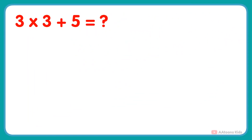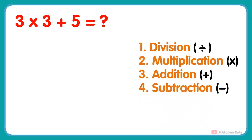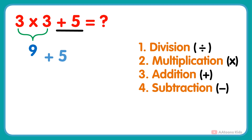What is 3 multiplied by 3 plus 5? In this problem, two operations — multiplication and addition — are given. So according to the order, we would first perform the multiplication: 3 multiplied by 3 gets 9. And next, add 5 to the result, and you will get your answer: 9 plus 5 equals 14.